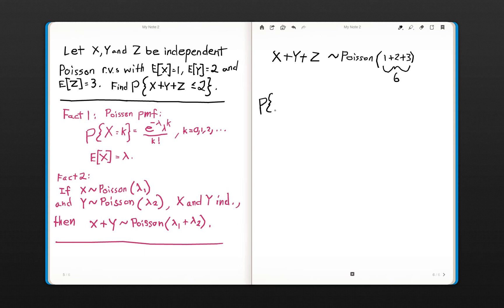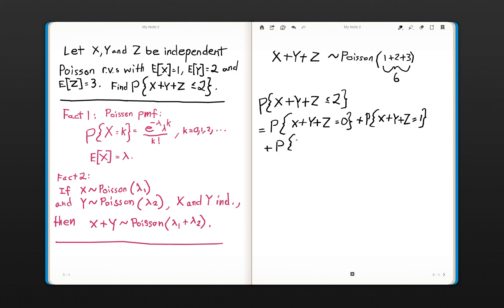So, the probability of X plus Y plus Z being less than or equal to 2 is the same as the probability that X plus Y plus Z equals 0, plus the probability that X plus Y plus Z equals 1, plus the probability that X plus Y plus Z equals 2.